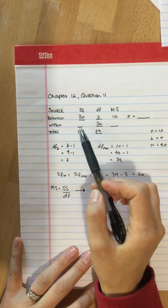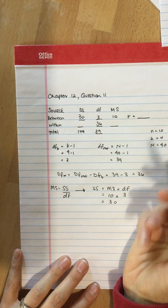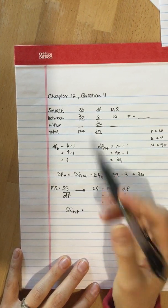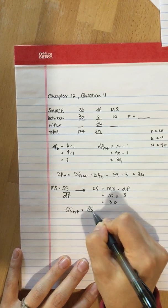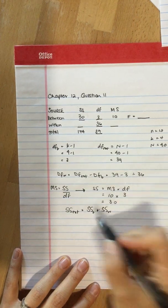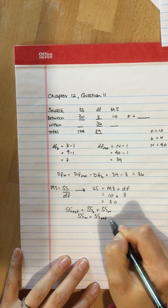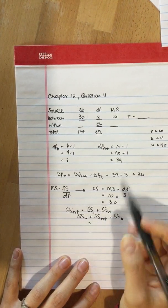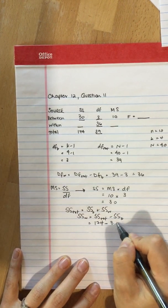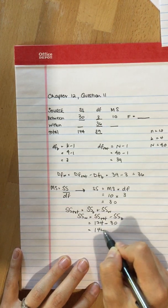From there we can calculate the sum of squares within because we have sum of squares total and sum of squares between. Sum of squares total equals the sum of squares between plus the sum of squares within. So we can rearrange that formula. Sum of squares within equals sum of squares total subtract sum of squares between. Total is 174, sum of squares between is 30, we just calculated that. And so we can calculate that through and that's 144.